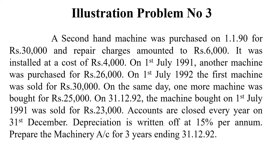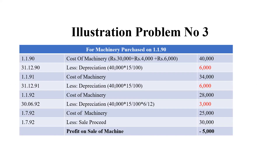We have to prepare the machinery account for 3 years. There are 3 machines and 2 machines are sold, so those 2 machines have a profit and a balance. Now let's work out this problem. On 1st January 1990, one machinery was purchased for Rs. 40,000. Depreciation is calculated as 40,000 into 15 by 100, which equals Rs. 6,000.